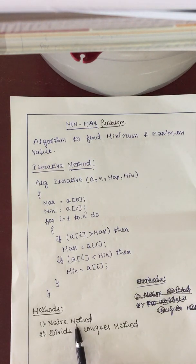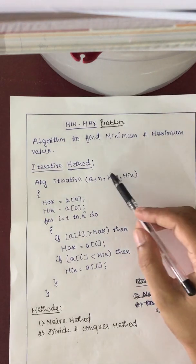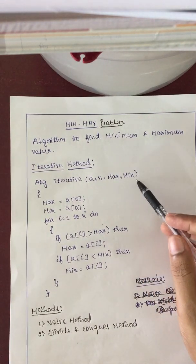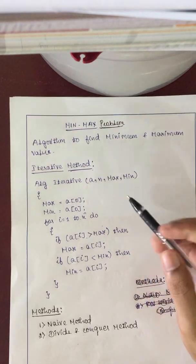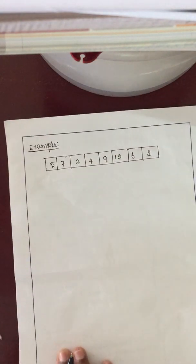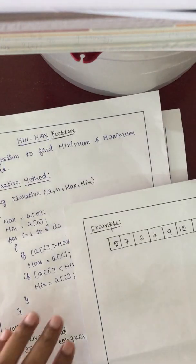First let us discuss the naive method. As I told you before, it is nothing but an iterative method — it is a common method to solve any problem. This is a pseudo code for finding max and min using the iterative method. Before discussing the pseudo code, let's go through one example, and then we will come back to the pseudo code.